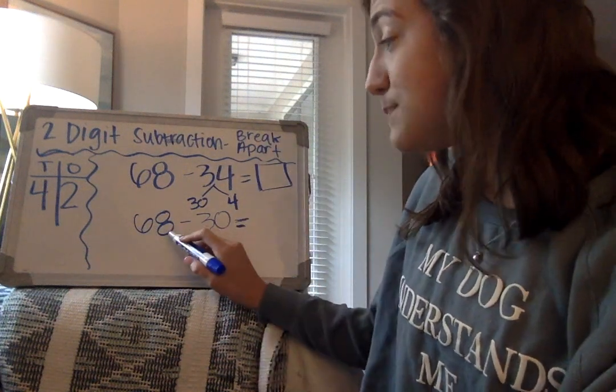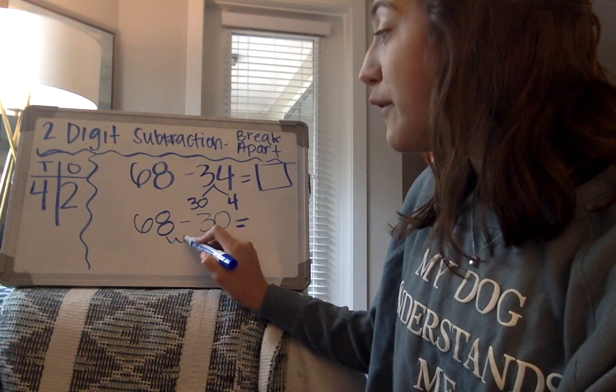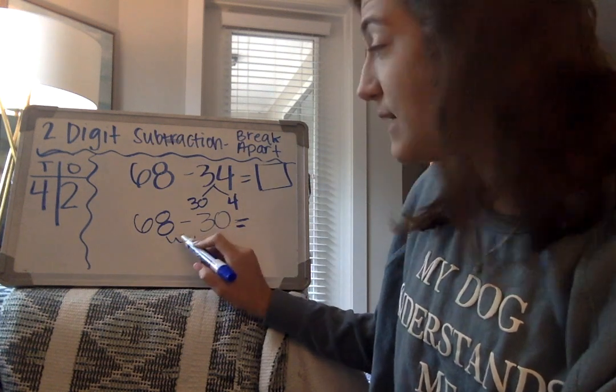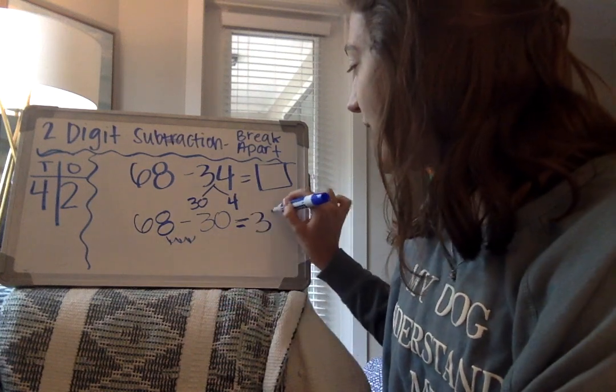So we have 68. We'll go to 58, 48, 38. I subtracted 3 tens and I get 38.